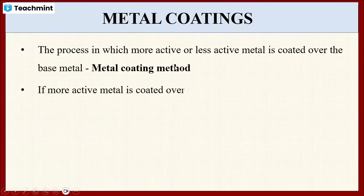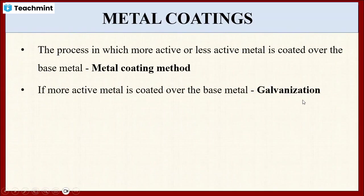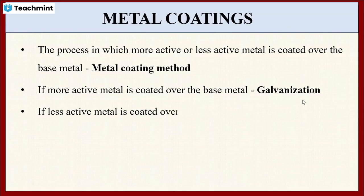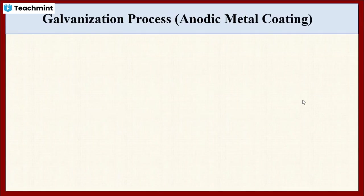When the more active metal is coated over the base metal, then it is known as galvanization. Meanwhile, when the less active metal is coated over the base metal, then that process is known as tinning.